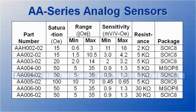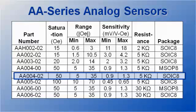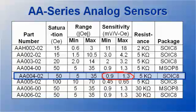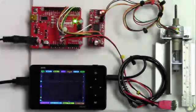First we'll test an AA004-02E sensor, which has a relatively high saturation field of 50 Ørsted, but relatively low sensitivity of 1 millivolt per volt per Ørsted. Here's the demonstration.